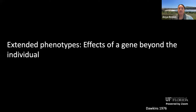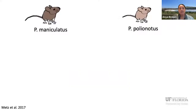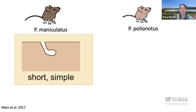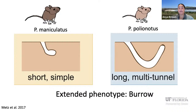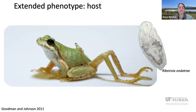But what about the extended phenotype? That's the effects of a gene that can go beyond the individual. An example I really like are these two sister taxa of mice: one that makes short simple burrows and one that makes long multi-tunnel burrows. It's this burrow length and size that's the extended phenotype — it influences the survival of these mice and it's heritable. Another example I like is between hosts and their parasites, where the host is actually the extended phenotype of the parasite — as with this trematode parasite and frog host, where infected frogs grow extra limbs, making it easier for them to be captured by the next host in the trematode's life cycle.